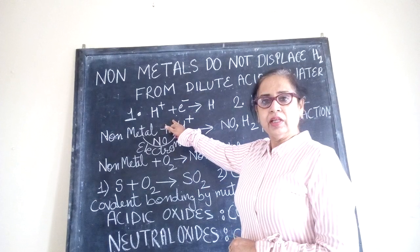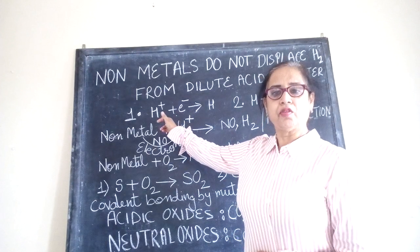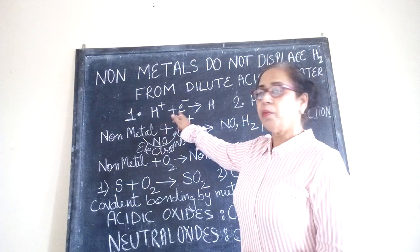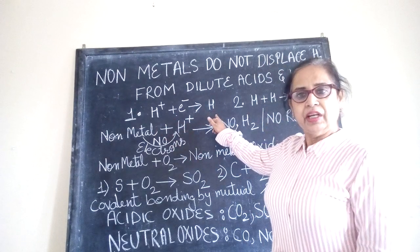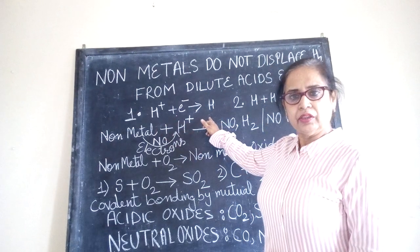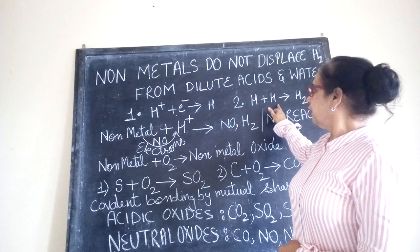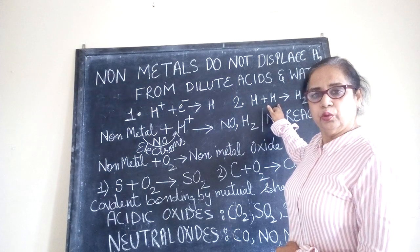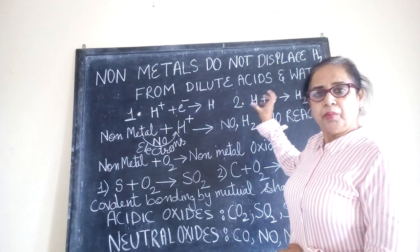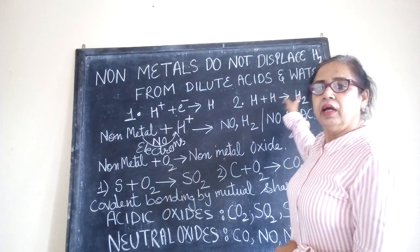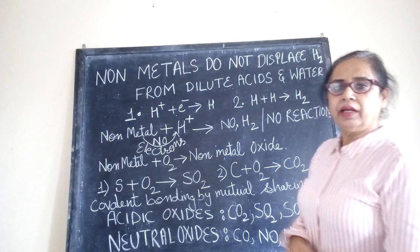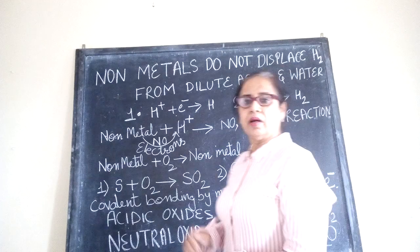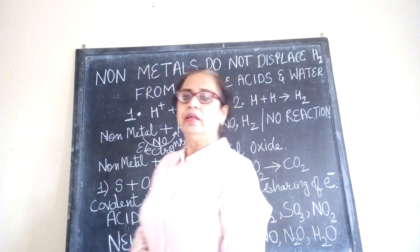What actually happens is: hydrogen positive ions accept the electrons and change into hydrogen atoms. In the next reaction, these hydrogen atoms combine through a covalent bond and liberate hydrogen gas. This is the basic requirement.